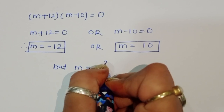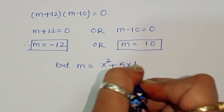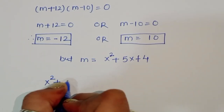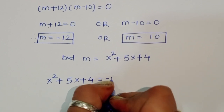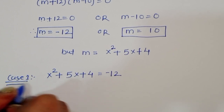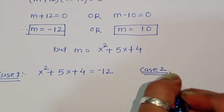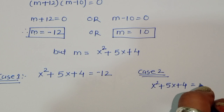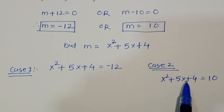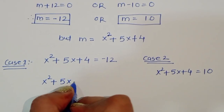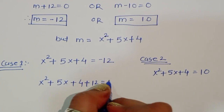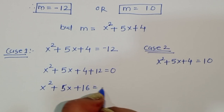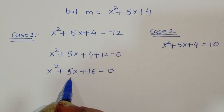Recall that m = x² + 5x. For Case 1, m = -12: x² + 5x + 4 = -12, so x² + 5x + 16 = 0.